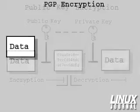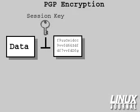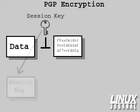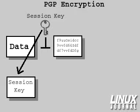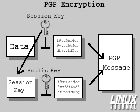PGP uses a clever mix of symmetrical and public key encryption, taking advantage of the strengths of each. Data encrypted with PGP is first compressed, and then encrypted with a random symmetrical key known as a session key. This encryption is strong and fast. The session key is then encrypted with the recipient's public key, so that the session key is not known unless it is decrypted with the recipient's private key. This makes key distribution easy and secure, but since only the session key is encrypted, the encryption and decryption process is still very fast. The data encrypted with the session key, and the session key encrypted with the recipient's public key, is then packaged together to make a complete PGP message.